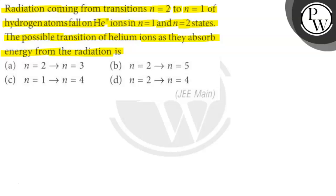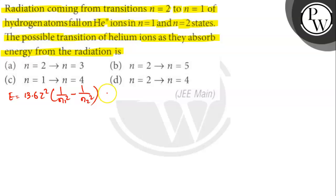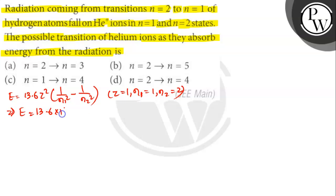The energy released during the transition from N=2 to N=1 of the hydrogen atom can be written as E = 13.6 × Z² × (1/N1² − 1/N2²). For hydrogen, Z=1, N1=1, N2=2. Substituting gives E = 13.6 × (1/1² − 1/2²) = 13.6 × 3/4 eV.